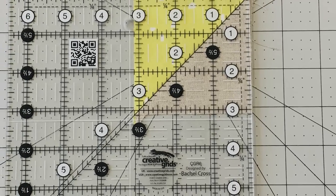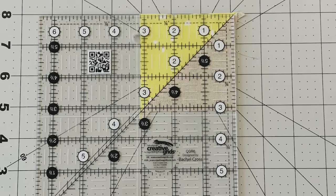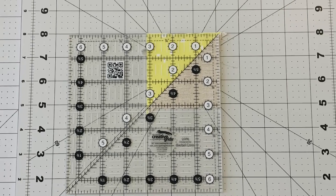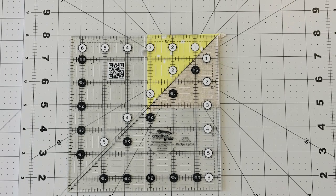I rounded my squares up to three and a half inches to allow a little wiggle room so I'm able to trim my half square triangles to get a perfect three inch unfinished half square triangle.